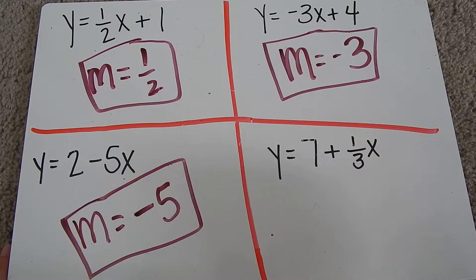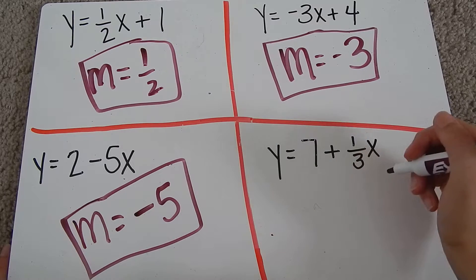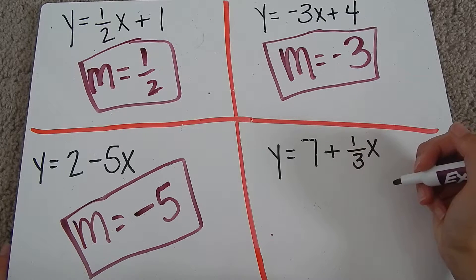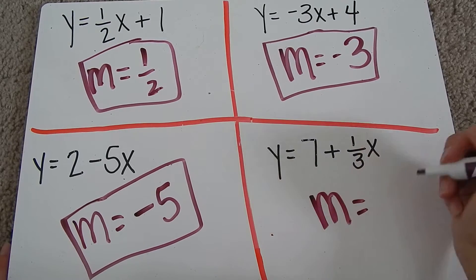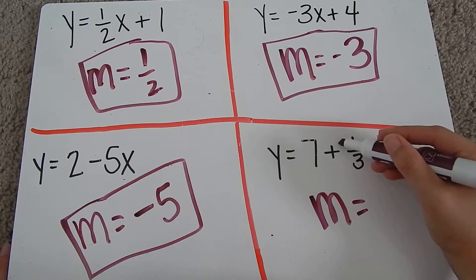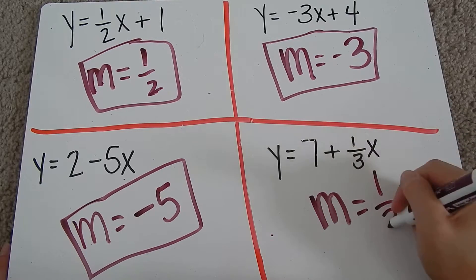And then our last example on this slide, we have y equals seven plus one-third x. Again, we're looking for the number attached to the x, which is this positive one-third. So my m is one-third.